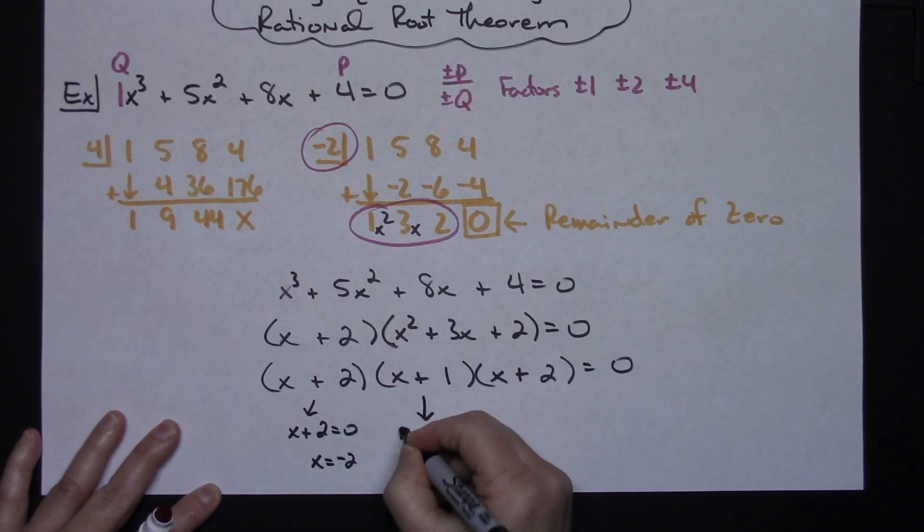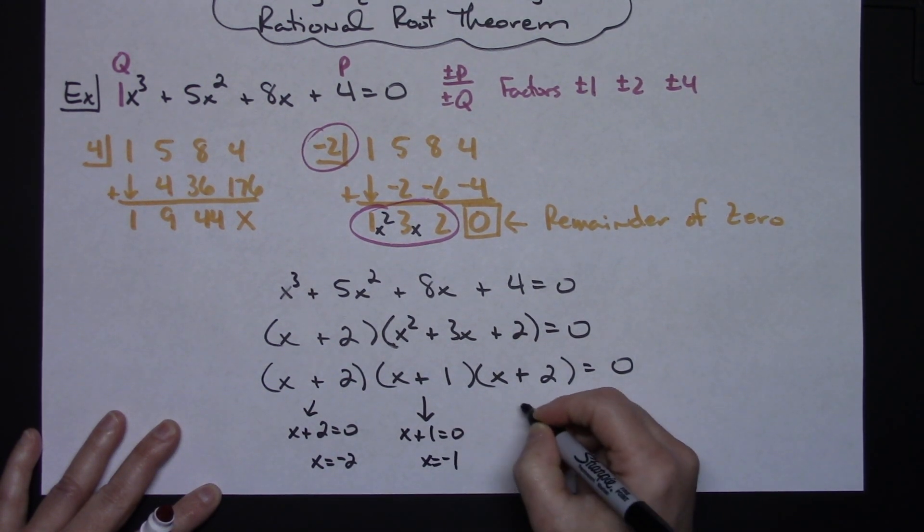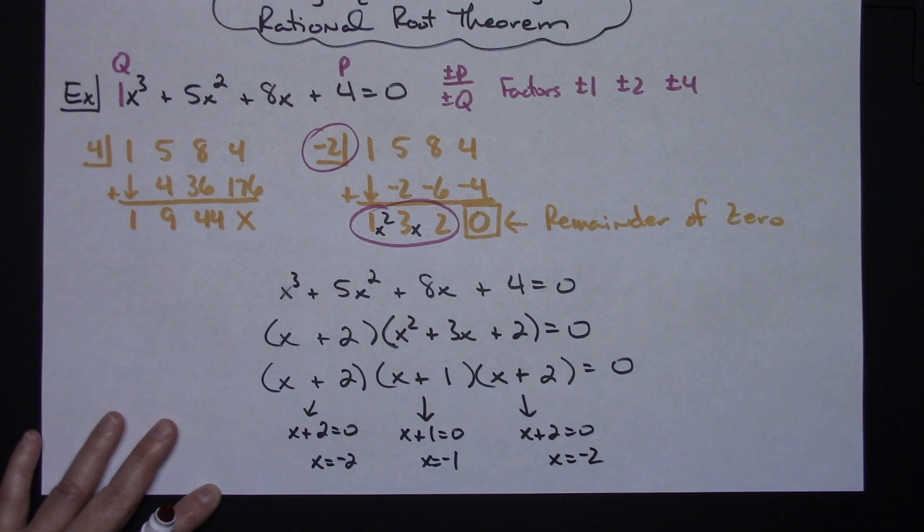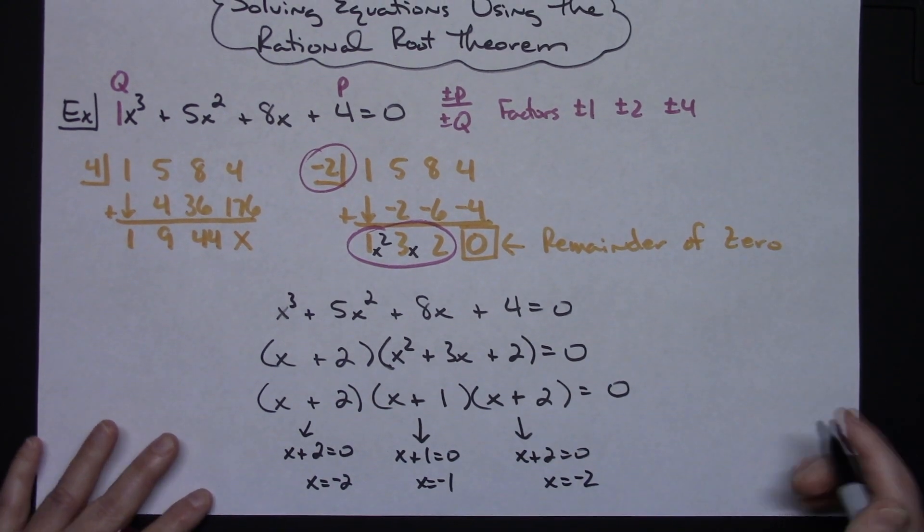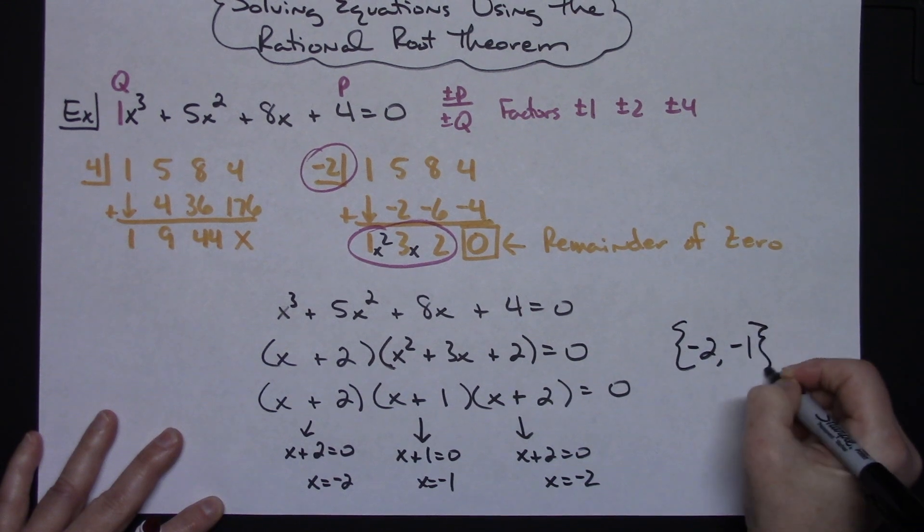Here setting that equal to zero x + 1 = 0 so x = -1 and again this is going to be the same thing as right there x + 2 = 0 which is going to give me an answer of x = -2. So I'm going to have a solution set of -2 and -1.